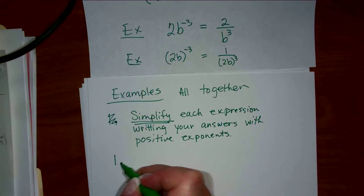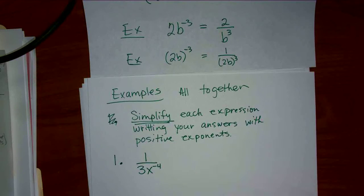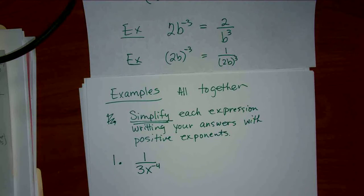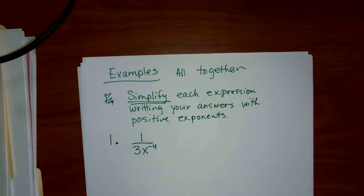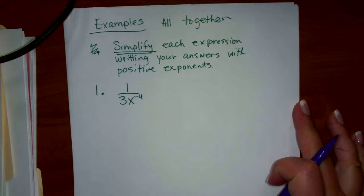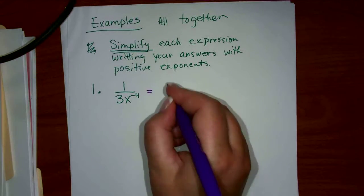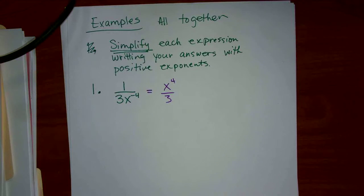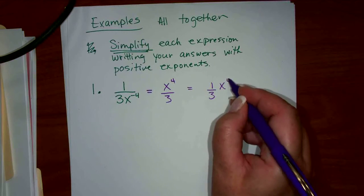Number one — easy enough. I just wanted to put one example with the exponent on the bottom. So what has the negative 4? It's just the x, not the 3. So the 3 stays on the bottom and the x moves up. This would be x to the 4 over 3.